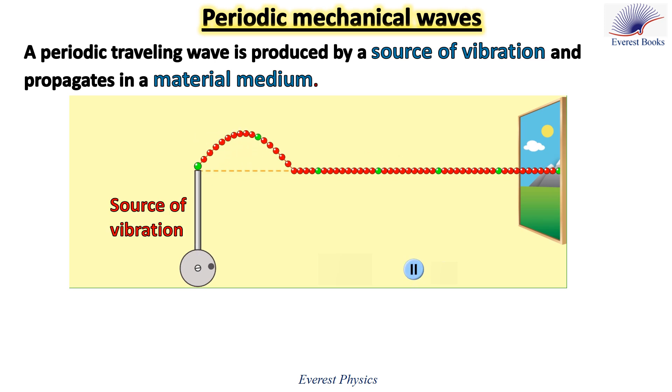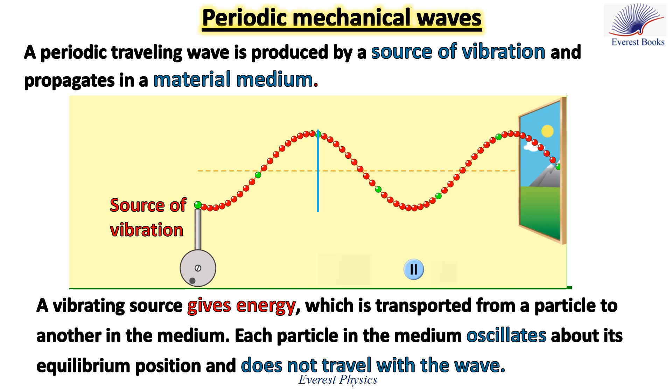When the source starts vibrating, a wave is produced and propagates along the rope. The blue line represents the path described by one of the green particles. This particle moves up and down about its equilibrium position and does not travel with the wave. We observe that also each particle oscillates about its equilibrium position and does not travel along the rope. So what do we conclude? We conclude that a vibrating source gives energy which is transported from a particle to another in the medium. Each particle in the medium oscillates about its equilibrium position and does not travel with the wave.